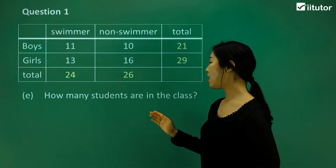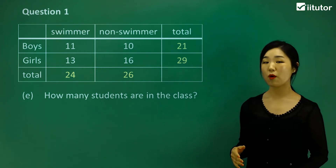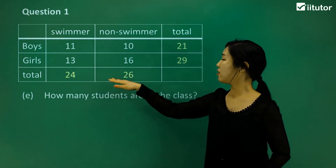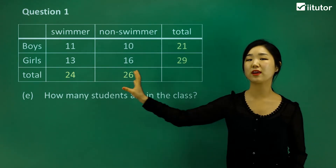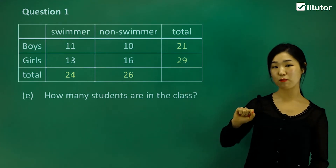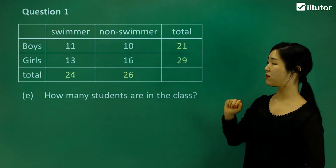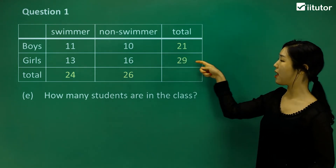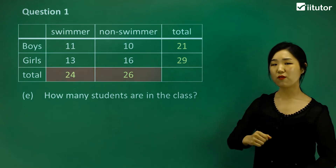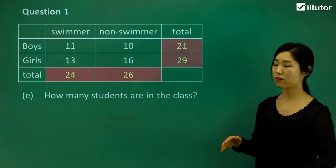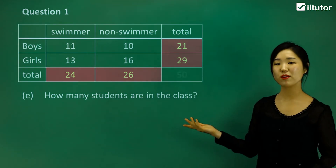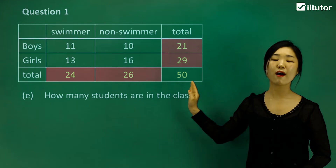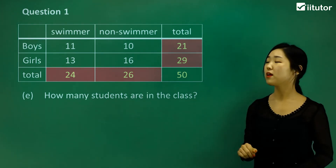Next it asks how many students are in the class — the total. There are 24 swimmers and 26 non-swimmers, so adding those gives the total. Looking at the totals column, there are 21 boys and 29 girls. Either way — 24 plus 26, or 21 plus 29 — both give us 50. The total must be 50.